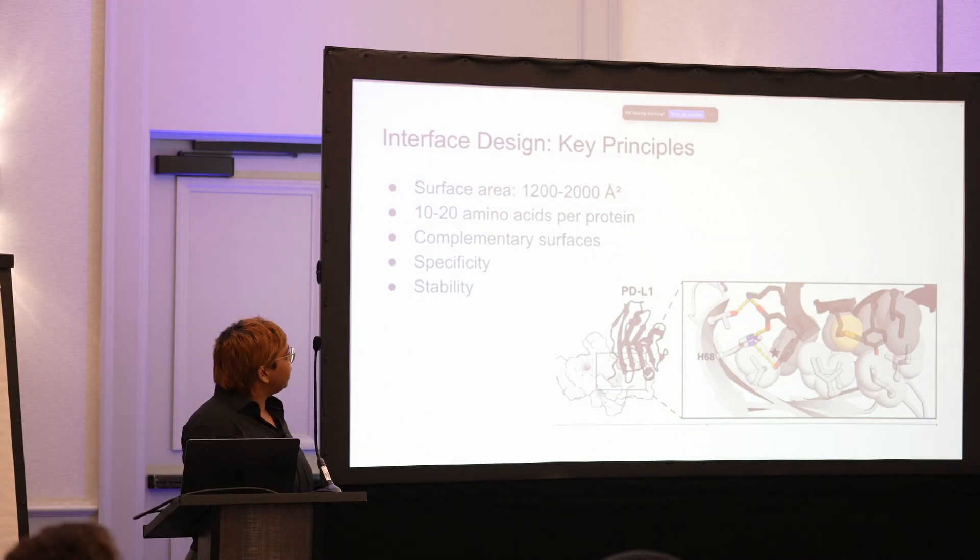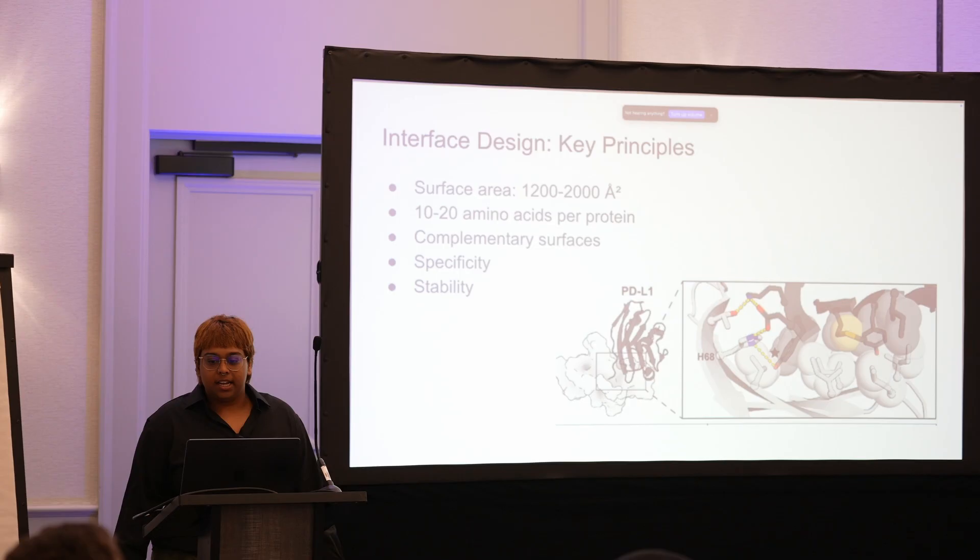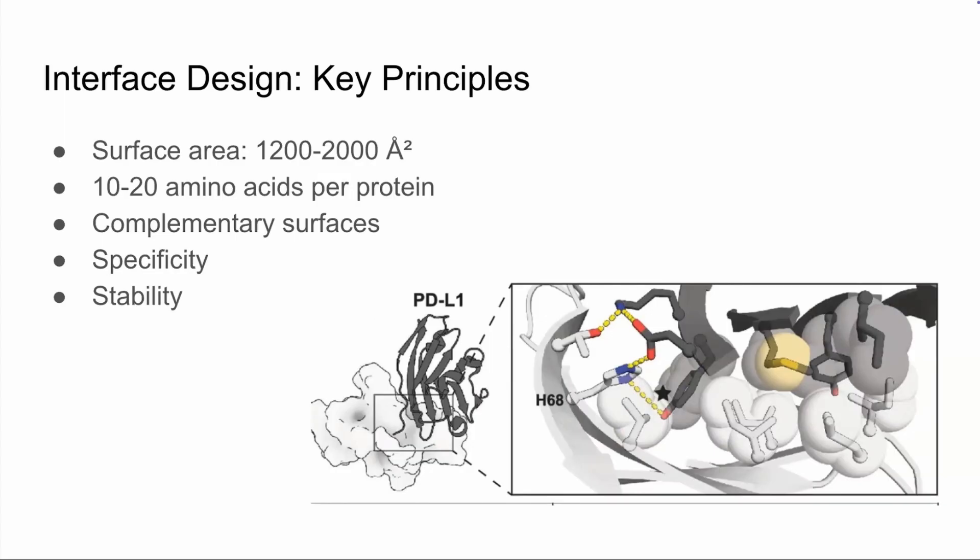It's usually about 10 to 20 amino acids per protein. I like to think of it like a handshake. So you need to make enough contact that it's secure, but you don't want to be grabbing the other person's hand. You want to be able to let go as well. And you need the surfaces to be complementary like puzzle pieces.